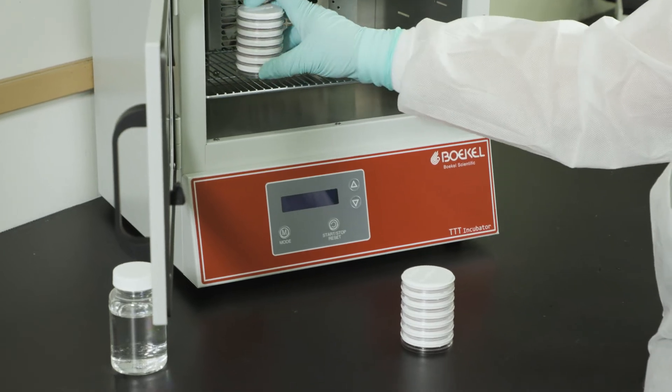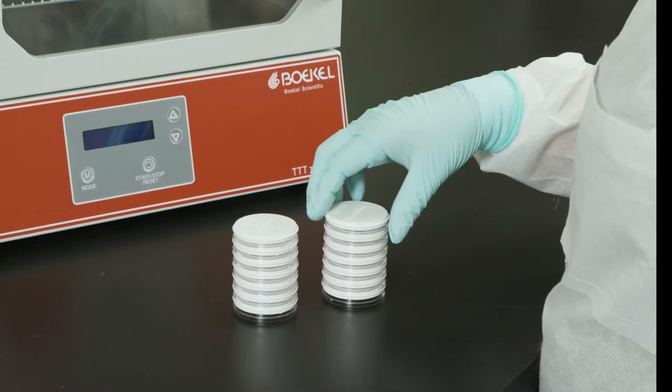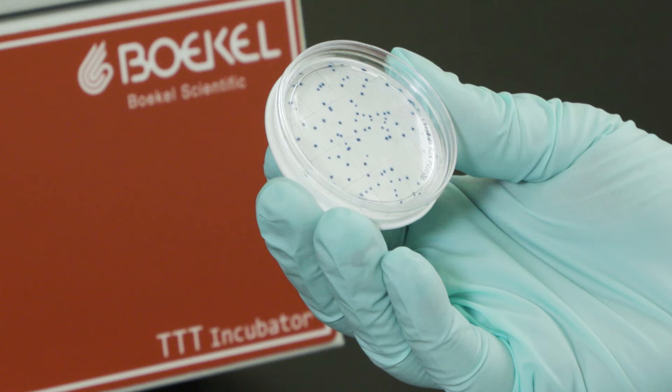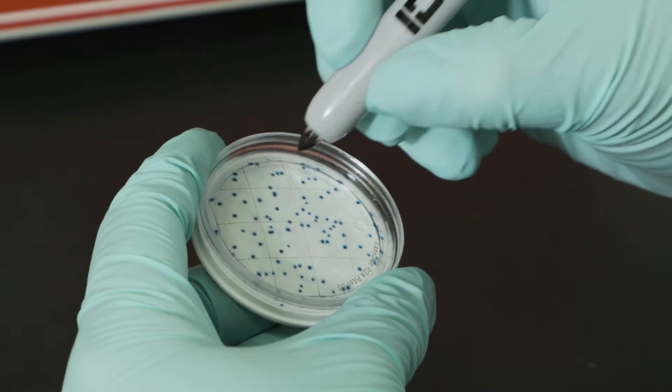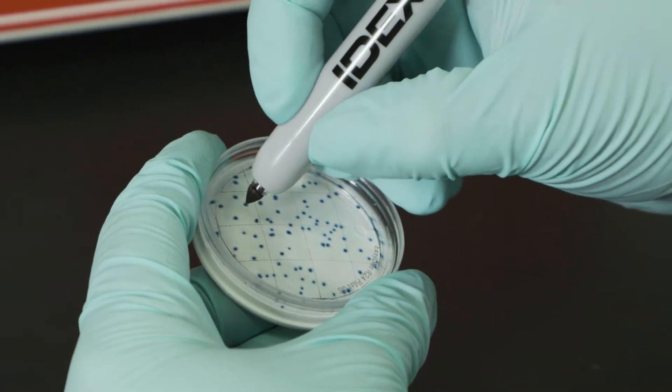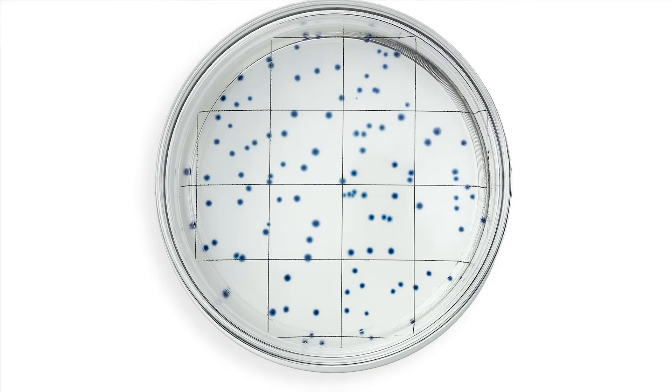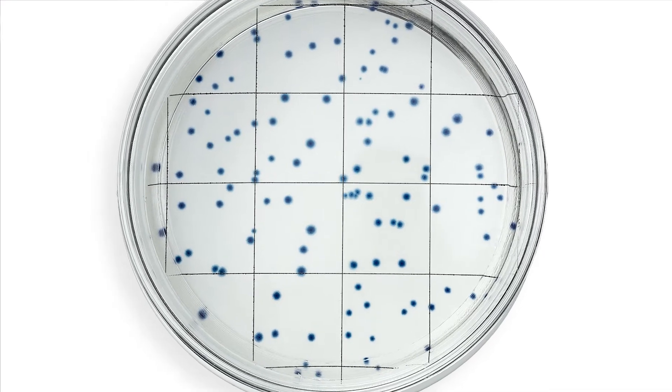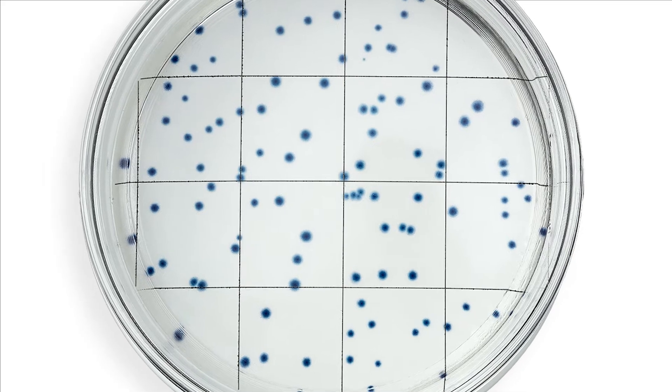Remove the plates from the incubator and immediately examine for colony growth. Sum all colonies for a result. Note that most colonies will produce a blue color and some will exhibit natural pigments. All colonies should be included in your result.